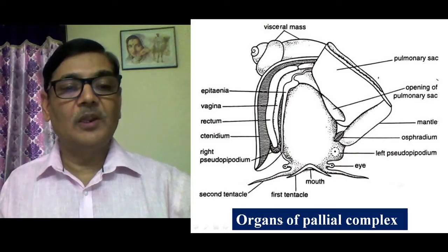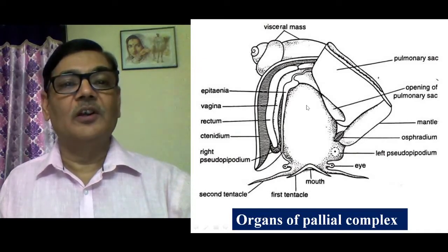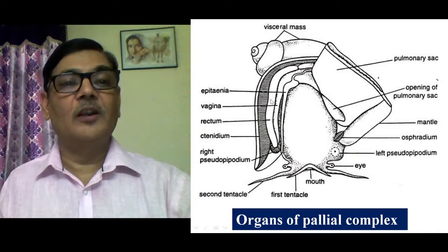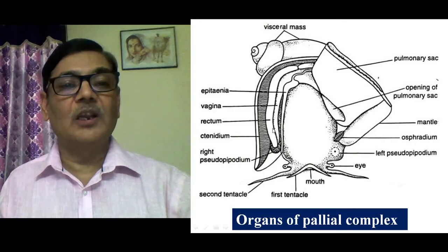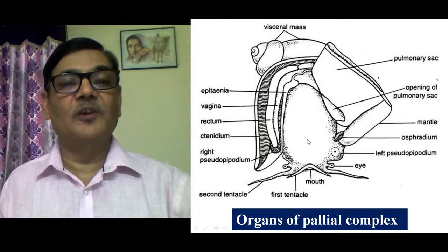Organs of palleal complex means those organs situated in the palleal cavity or mantle cavity. In the larval form, the mantle cavity is located in the posterior side of the animal, but because of torsion the visceral organs get twisted 180 degrees. The palleal organs also get twisted 180 degrees, so all those structures located in the palleal cavity of the larva in the posterior side are brought to the anterior side. Since Pila is a gastropod snail, it also shows the phenomenon of torsion.